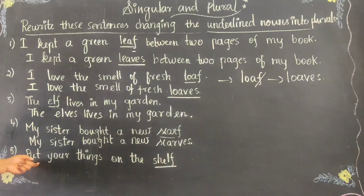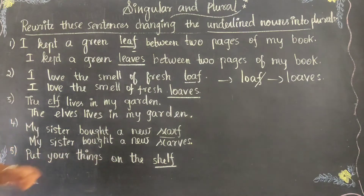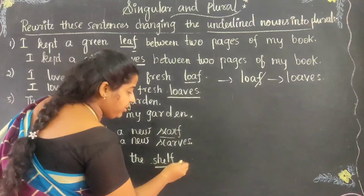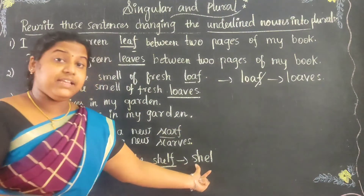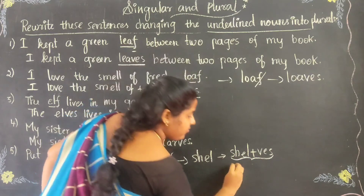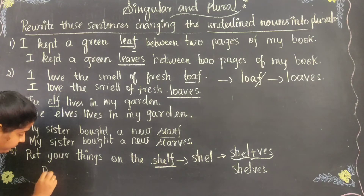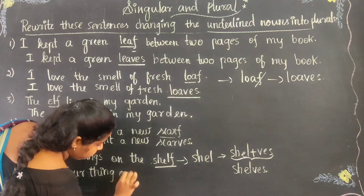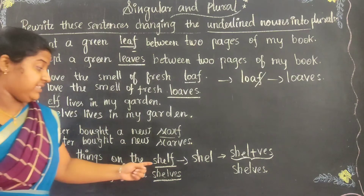Last example: Put your things on the shelf. Shelf is the underlined word. The word ends with F. So you have to drop this F — that is the first step — and then add V-E-S. It changes into shelves. The sentence becomes: Put your things on the shelves. Shelf is singular and shelves is plural.